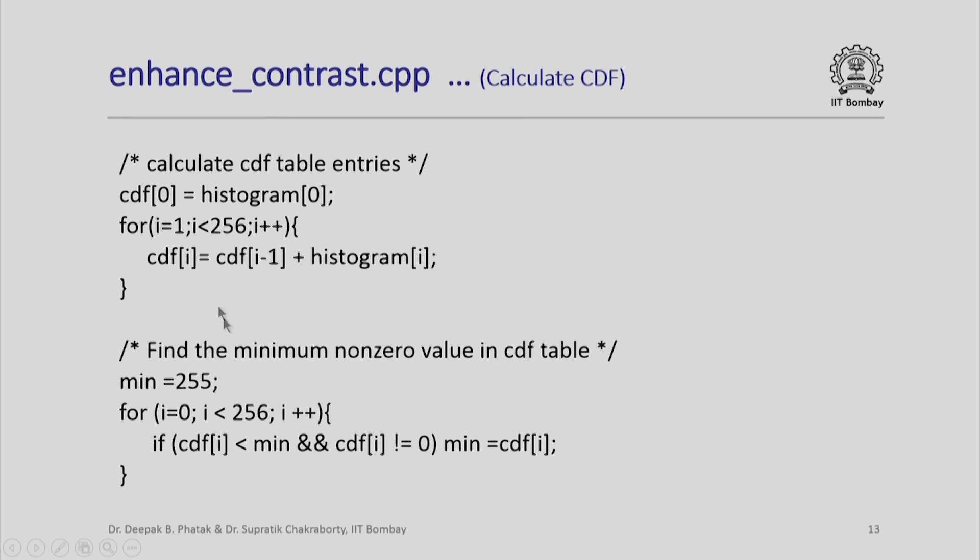Once I do that, I proceed to compute the cumulative distribution function. The cumulative distribution function is essentially the sum of the successive histogram elements up to that point. I start with the zeroth value being the same as histogram[0] and then keep adding every element of histogram[i] into the previous value of cdf to get the new element for cdf. This completes the calculations of cumulative distribution function.